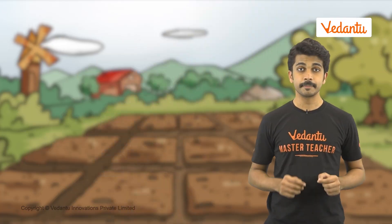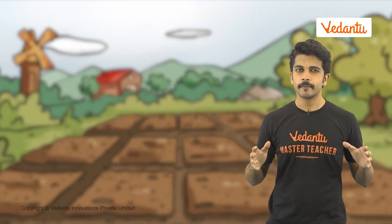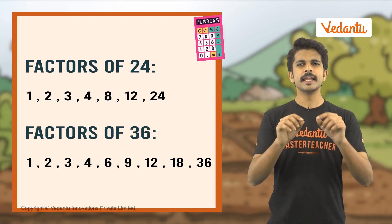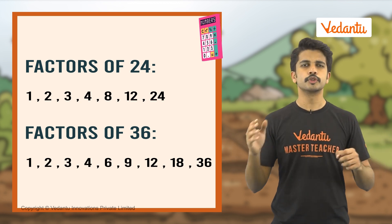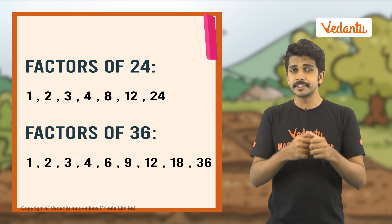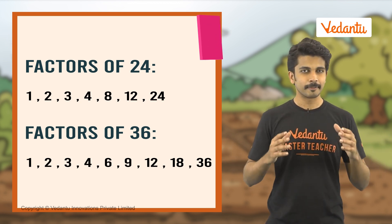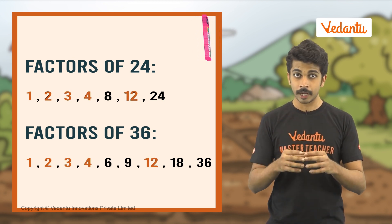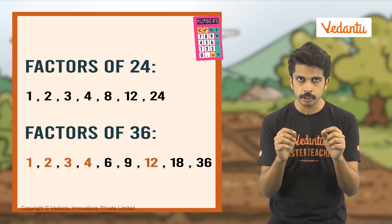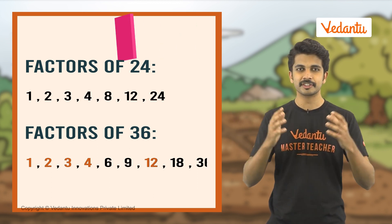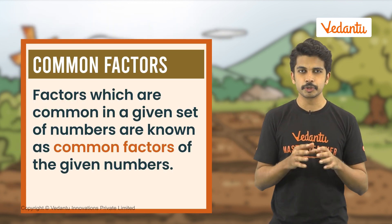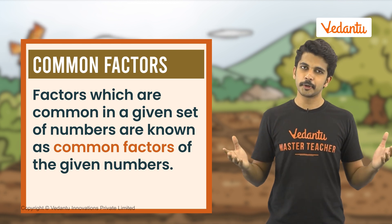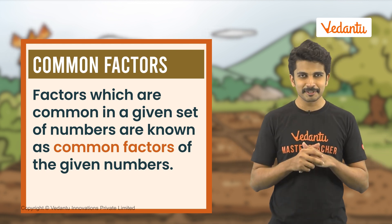Sticks that can be used to measure the two lengths will have to be factors of both 24 and 36. Let's list out the factors of the two numbers. We can see that the numbers 1, 2, 3, 4, and 12 are factors which are common to both 24 and 36. Such factors which are common in a given set of numbers are known as common factors of the given numbers.